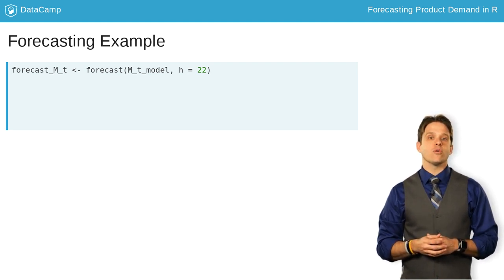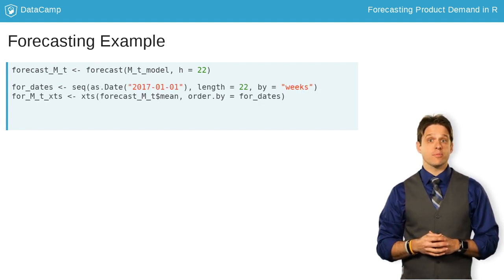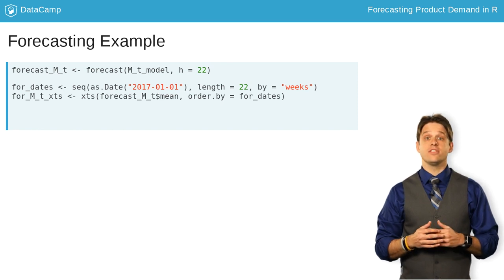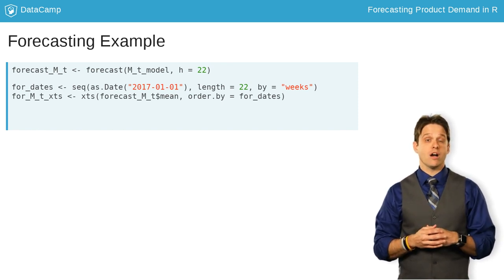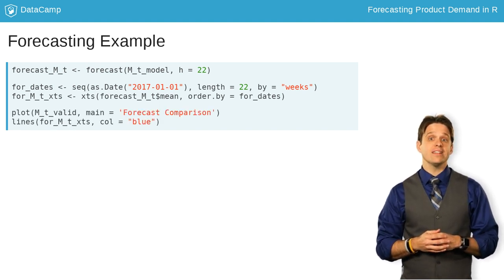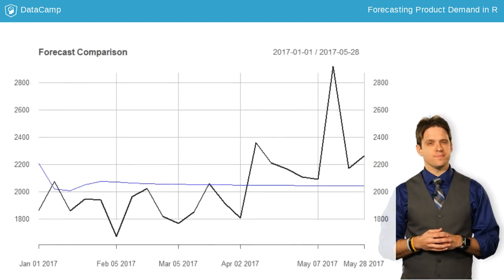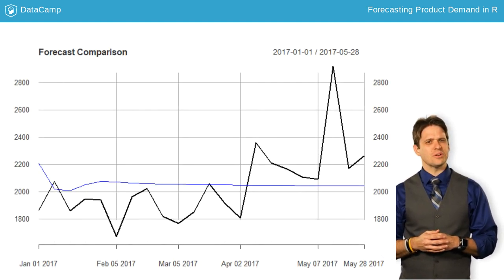but I want to compare the forecast with the validation set. First, create an XTS object from the forecast, call the mean attribute of your forecast object, then the plot function for your validation and the lines for your forecast. Hmm, that's an interesting looking forecast.